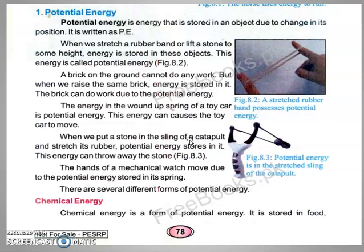Next, when we put a stone in the sling of a catapult, if you just stretch it without releasing, which energy is stored in it? Potential energy. If you stretch a rubber, potential energy stores in it, and this energy can throw away the stone. Also, the hands of a mechanical watch move due to the potential energy stored in its spring — the minute and hour hands are driven by that stored potential energy.